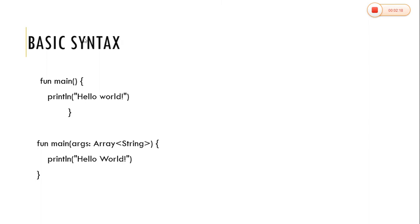Coming to the basic syntax of Kotlin, it starts with a function with a main method, the same as in Java — public static void main. If we are passing parameters in the command line, we use args; otherwise, we can call the main function as empty. So we are going to print our own message. This is the basic syntax of a Kotlin program.